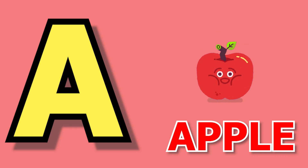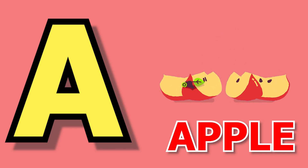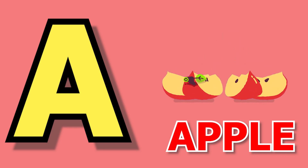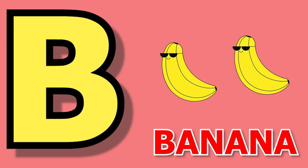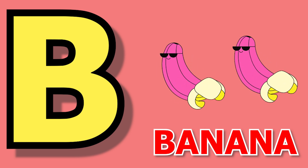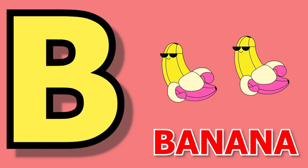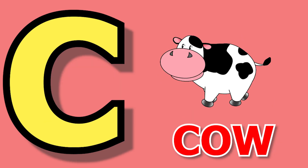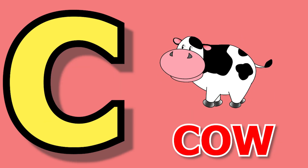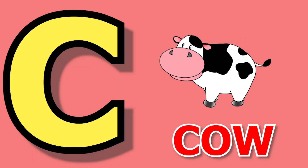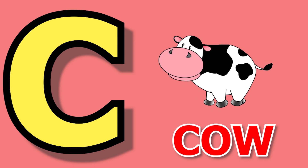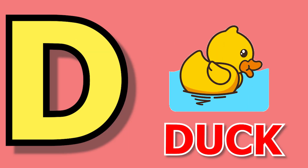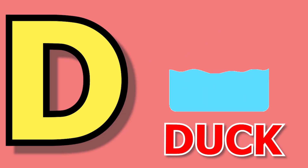A for apple, apple means save. B for banana, banana means kela. C for cow, cow means gay. D for duck, duck means buttock.